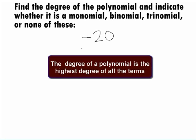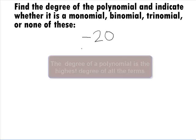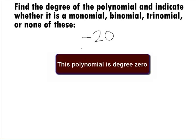When looking for the degree of a polynomial, we need to find the term with the highest degree. This will give us the value that we are seeking. It looks like our only term and therefore the term with the highest degree is negative 20.